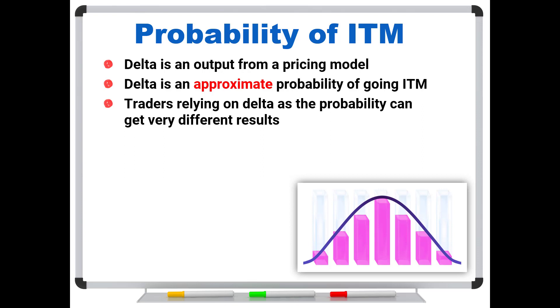Now, if the option is very deep in the money or very deep out of the money, Delta is going to be a fine approximation because you're either moving towards zero or one. But if you're somewhere in that middle range, you can be off by quite a lot. So again, the question is, where exactly does Delta come from?